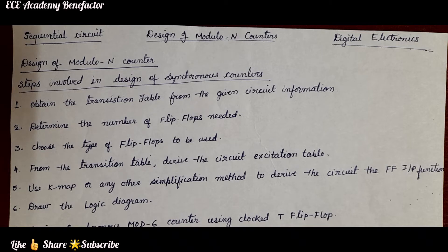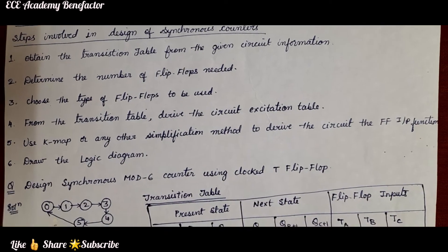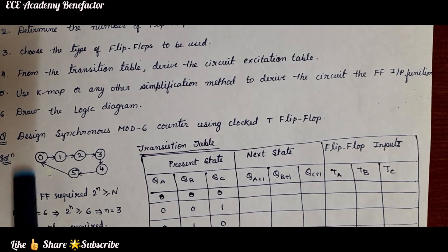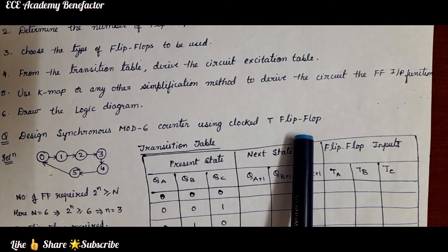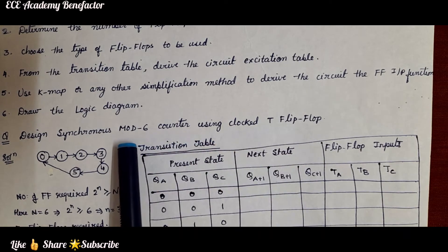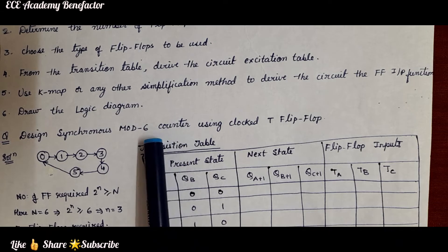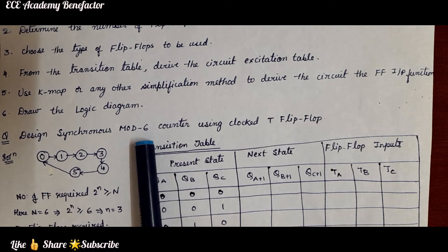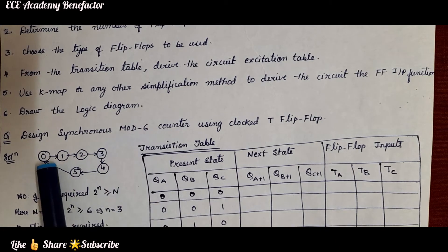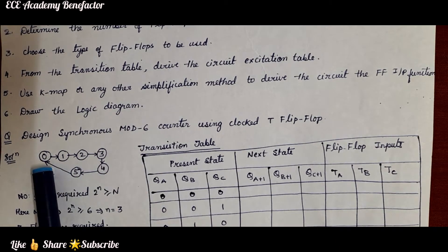Counters are of two types: synchronous counter and asynchronous counter. This topic covers a synchronous mod six counter. The given question is: design a synchronous mod six counter using a clocked T flip flop. Mod six counter means it will count six states starting from 0 to 5. After 5 it will go back to state 0.